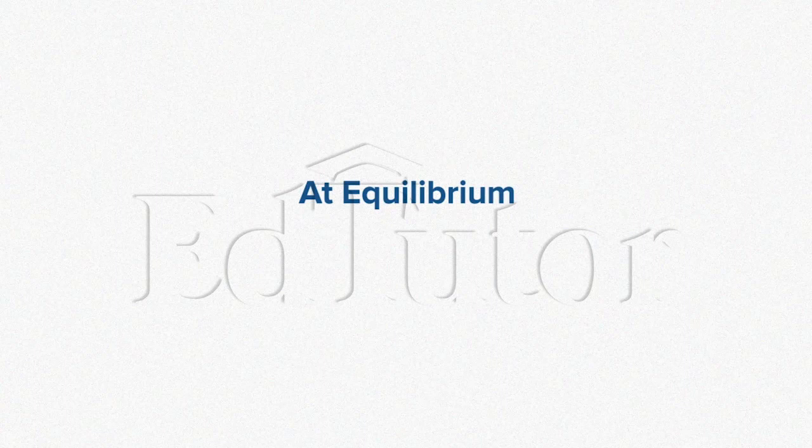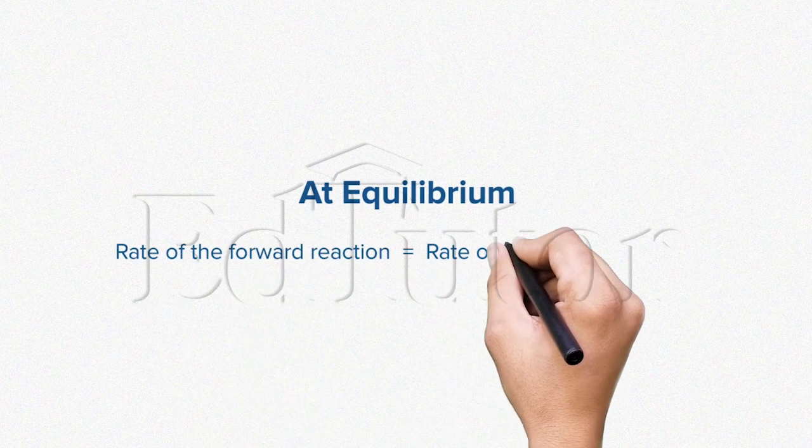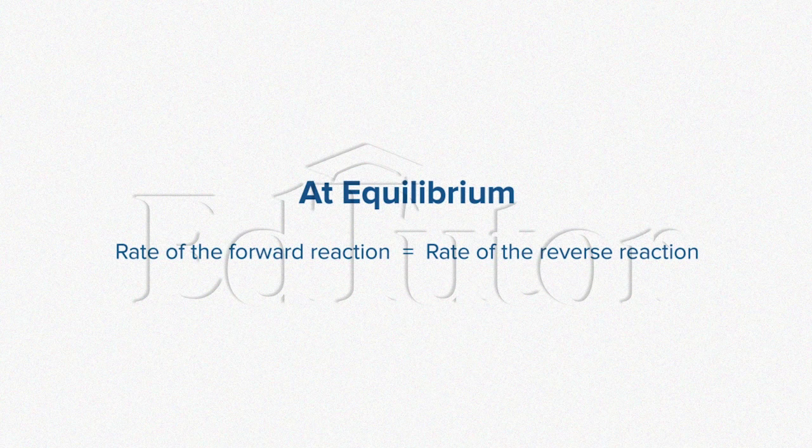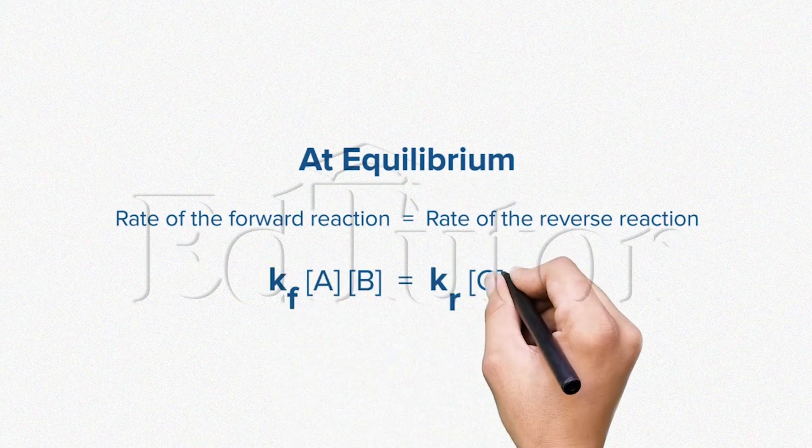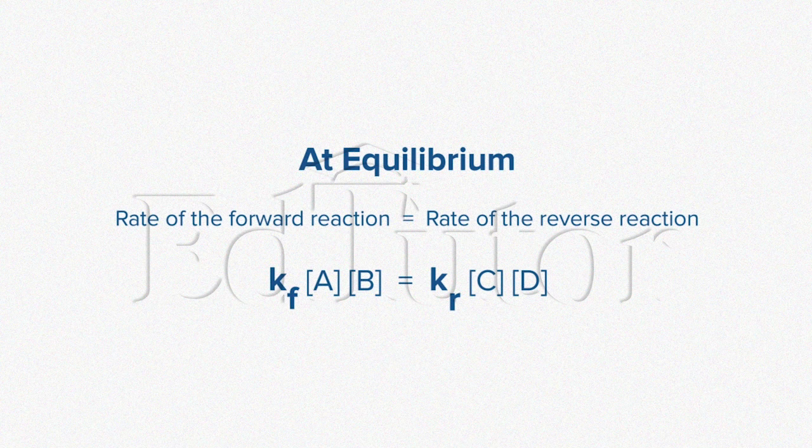Moving further, we now know that in the equilibrium state, the rate of the forward reaction is equal to the rate of reverse reaction. If we were to insert the values of the forward reaction from the previous equations, we come to the following equation as shown here.